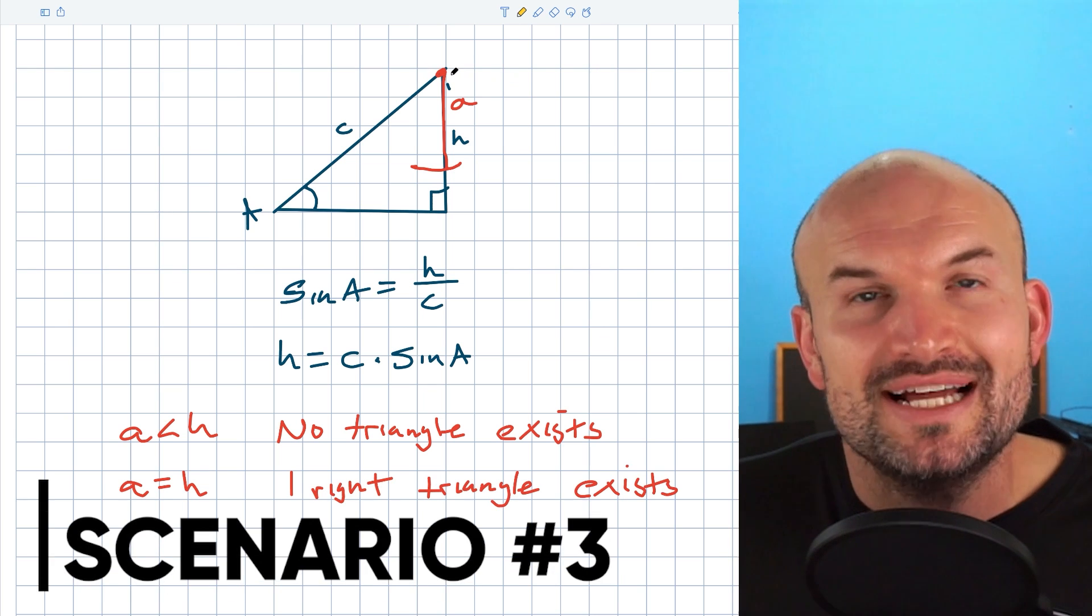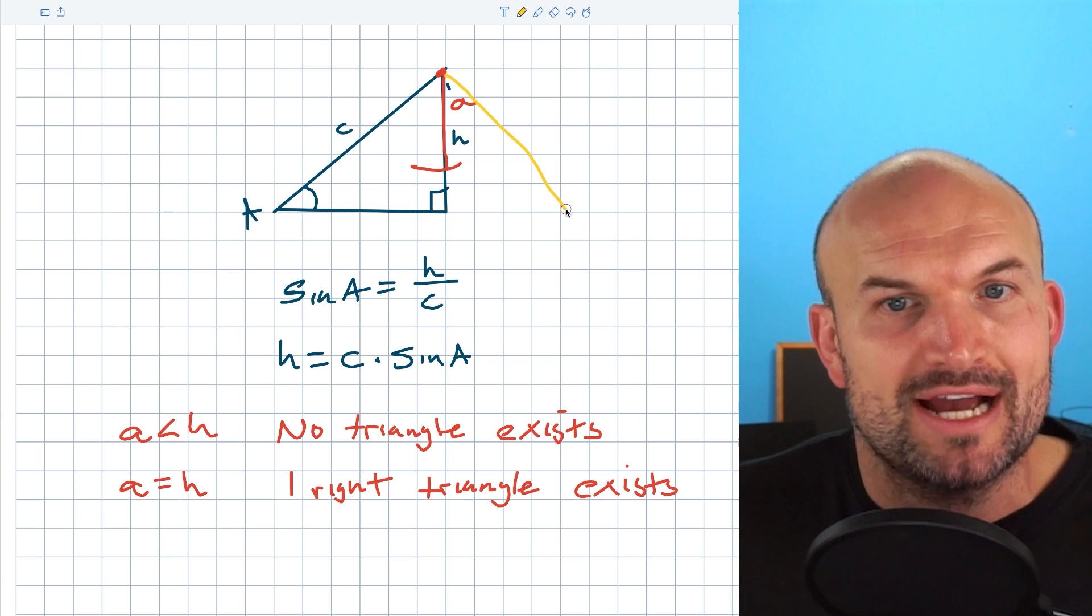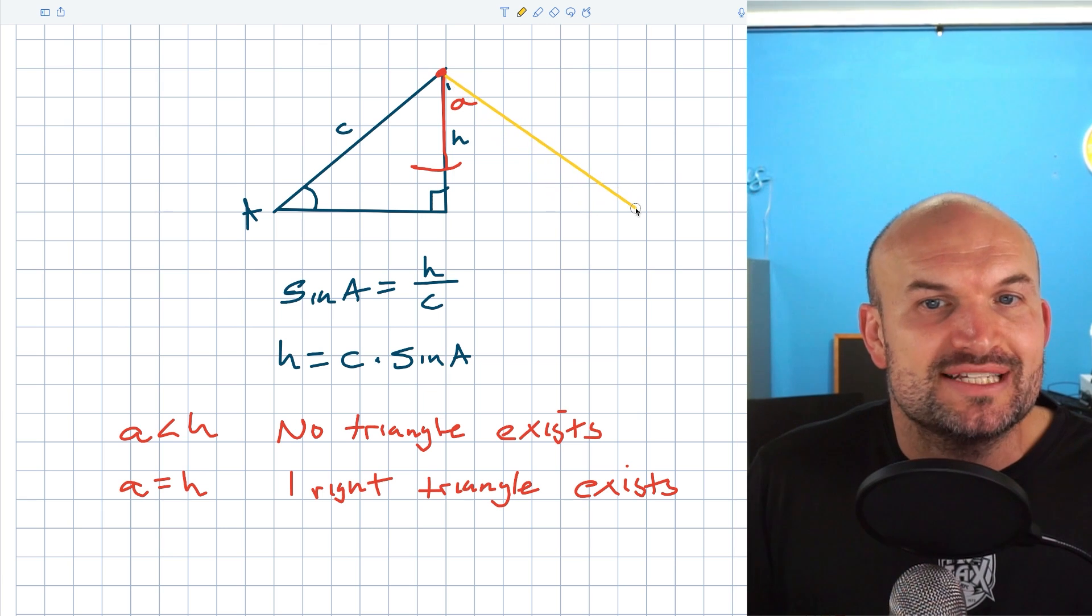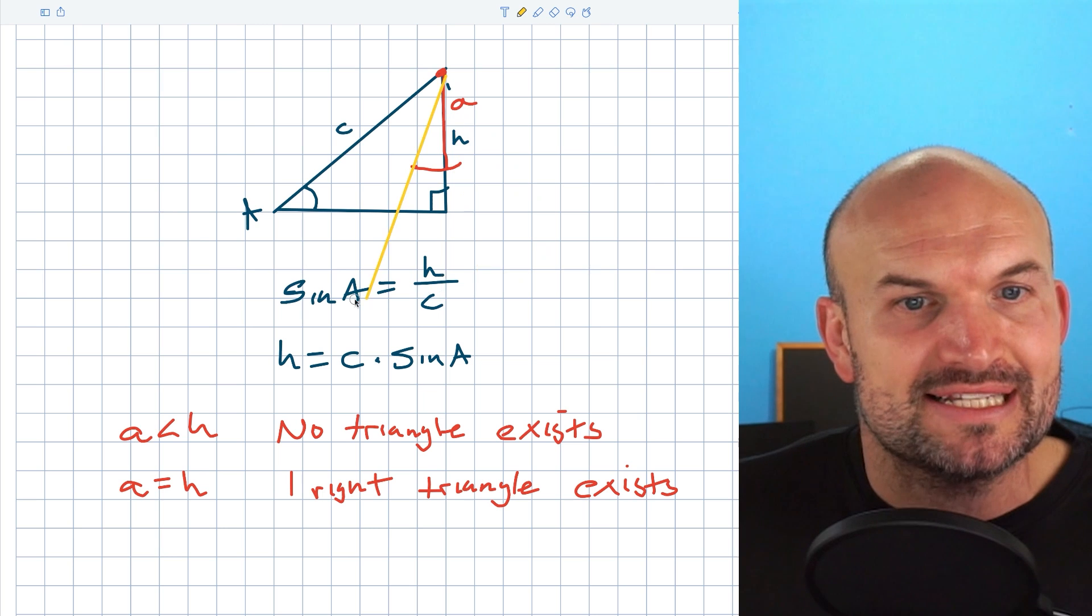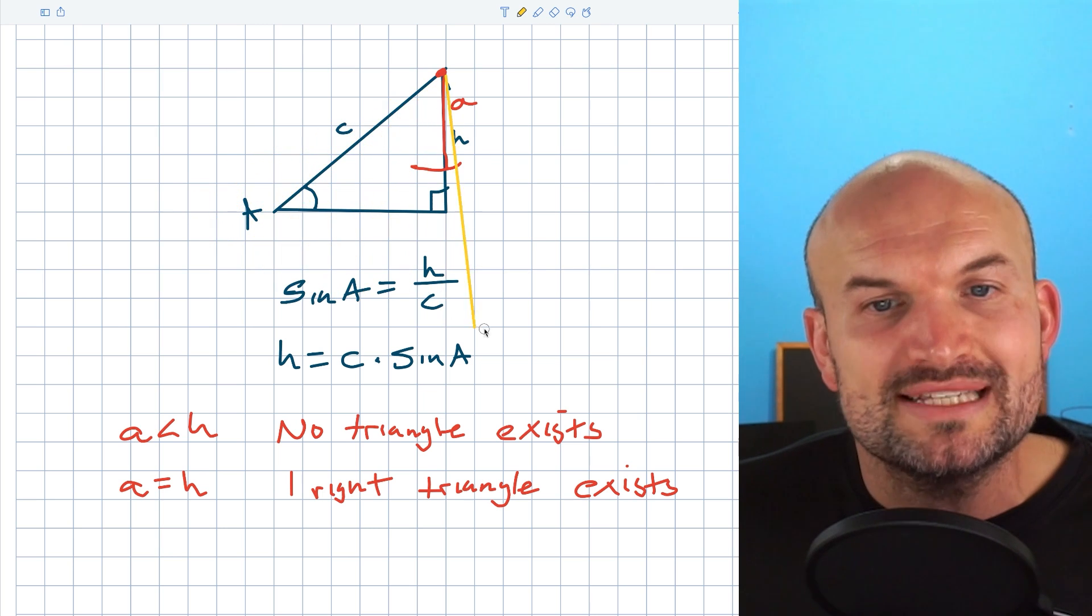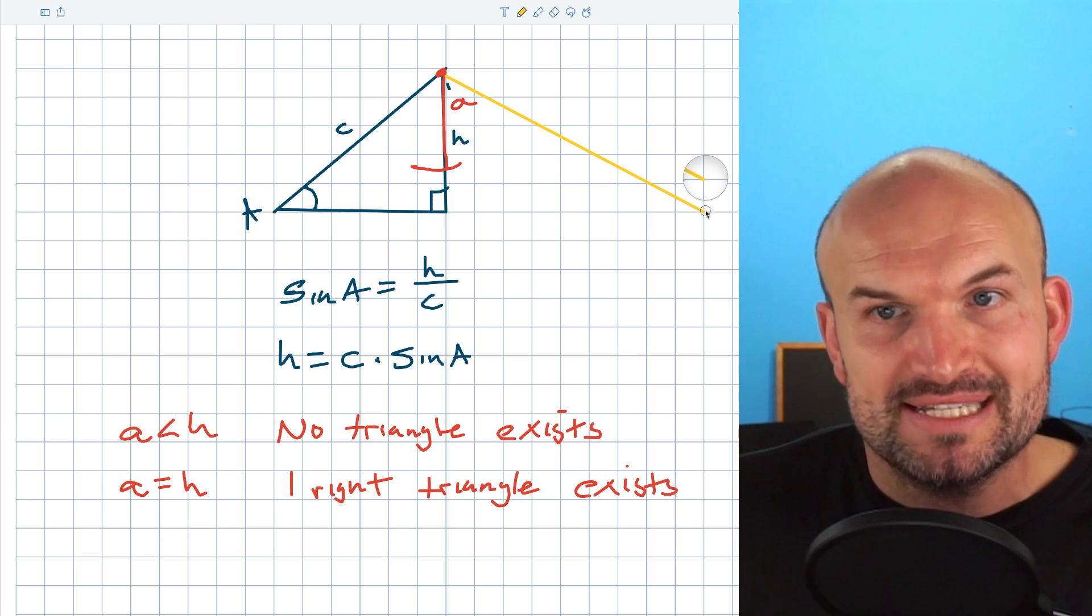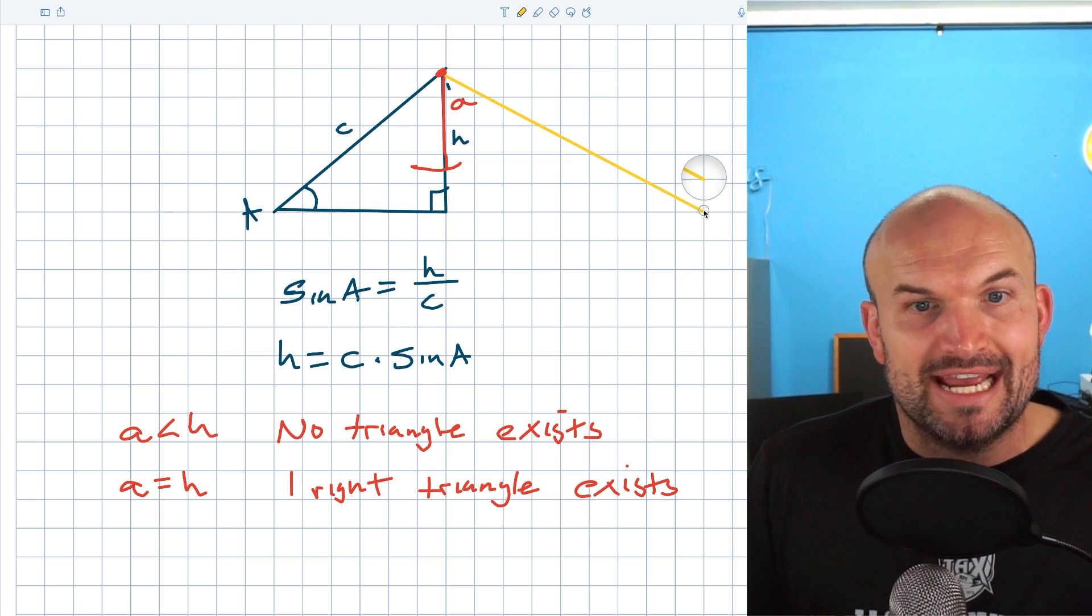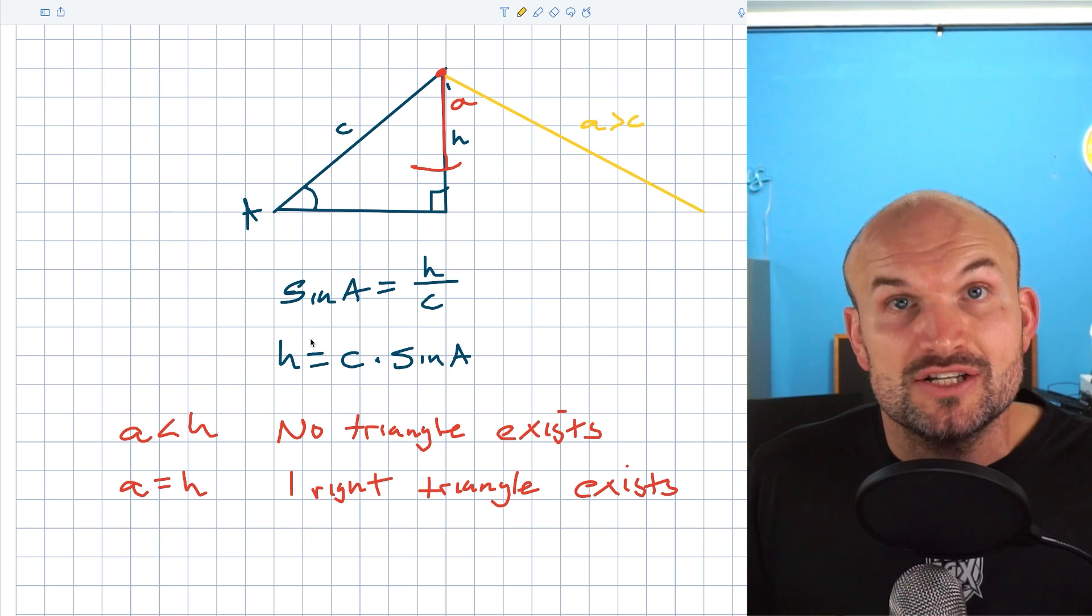Now let's look at another scenario. Let's say that A is going to be larger than H, right? So it's going to create a triangle, but it's also going to be larger than C. So let's say it looks like this. And notice here it doesn't make a triangle. It doesn't matter how I rotate this. The only time it's going to make one triangle is when it falls along this side of the base here. So when A is going to be larger than H, we know it's going to create a triangle. But when A is going to be larger than C, then one triangle is also going to exist.